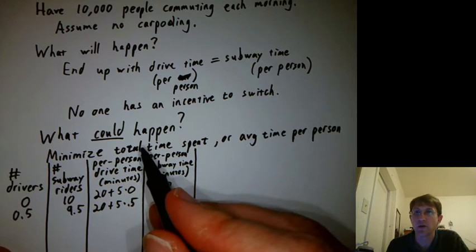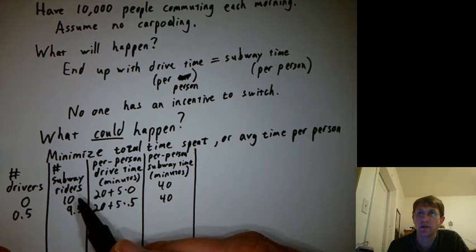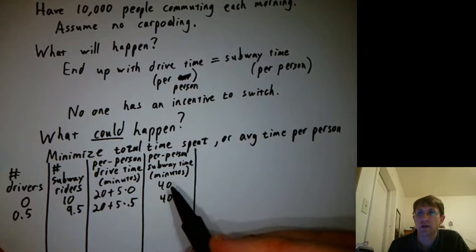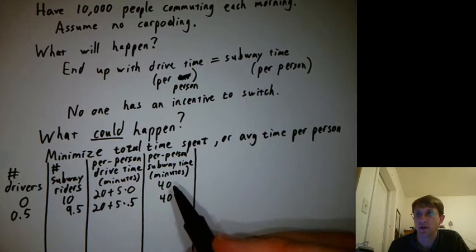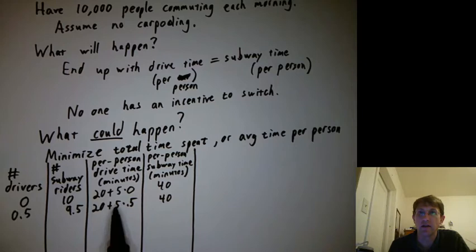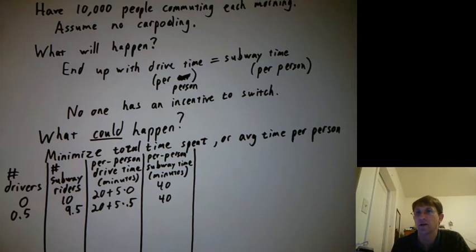If I want to think about total time spent, I'd say, well, I had 10,000 subway riders, or just 10. Each of them spent 40 minutes, so that would be 400,000 total minutes spent on the subway. If I had half a thousand drivers, and each of them spent this long, that's 22.5 minutes, how many total minutes did they spend in their cars? That would be related to how long their engines were running and how much carbon dioxide they emitted.